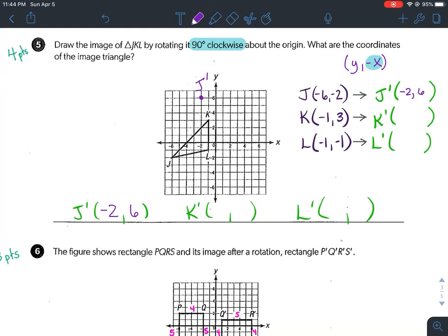So what you need to do now is find K prime and L prime, make sure you write them down on the line, and then graph your triangle and connect the points with straight lines, please. So again, find K prime, L prime, graph J prime, K prime, L prime on the coordinate plane, use straight lines to connect the points. If you have any questions on number 5, let me know.